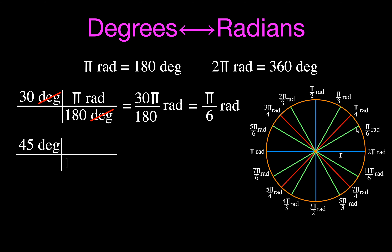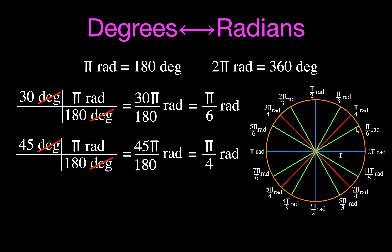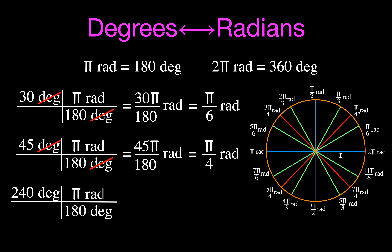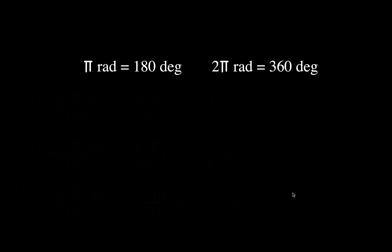The rest is the same process: 45 degrees gives 45 pi over 180, which reduces to pi over four. And 240 degrees gives 240 pi over 180, which reduces to four pi over three.